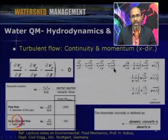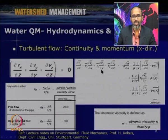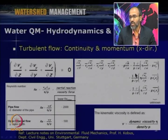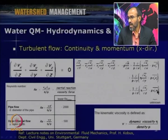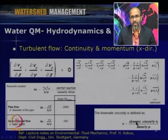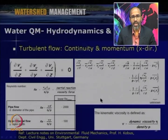The momentum equation for turbulent flow — derived from the Navier-Stokes equation and called the Reynolds transport equation — is described in terms of fluctuating velocity components Vx′, Vy′, Vz′. Here eta is the dynamic viscosity and nu = eta/rho is the kinematic viscosity.